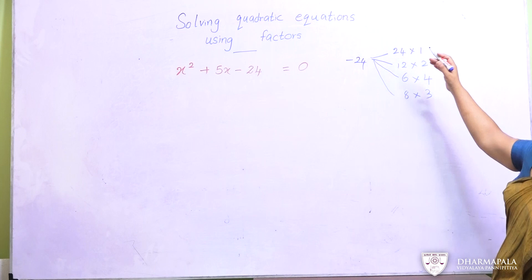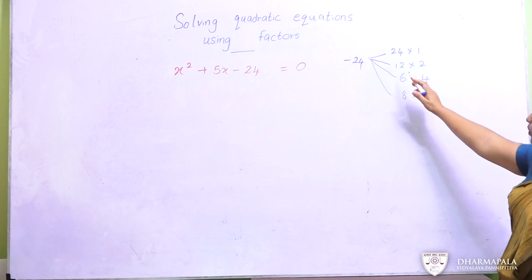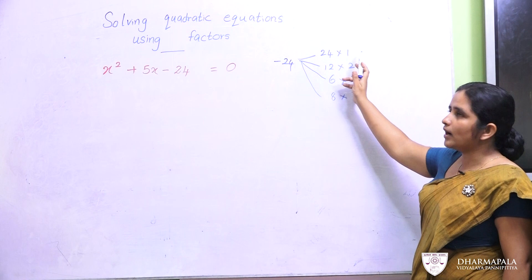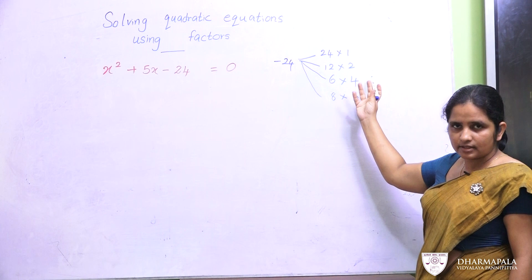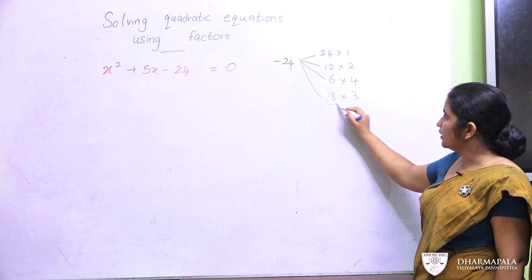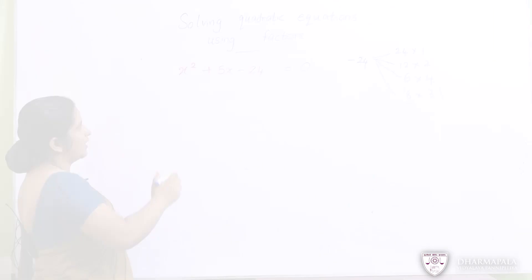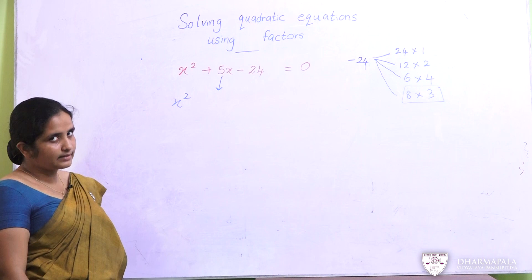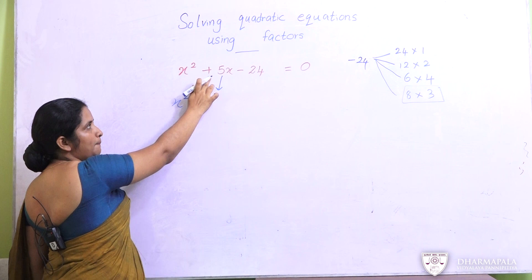When you subtract the factor pairs: 24 minus 1 gives 23; 12 minus 2 gives 10; 6 minus 4 gives 2; and 8 minus 3 gives 5. So the two factors we need are 8 and 3. Now, instead of 5x, we replace it with 8x minus 3x. Since we need plus 5, we put the plus sign with the greater factor. So the equation becomes: x squared plus 8x minus 3x minus 24 equals 0.